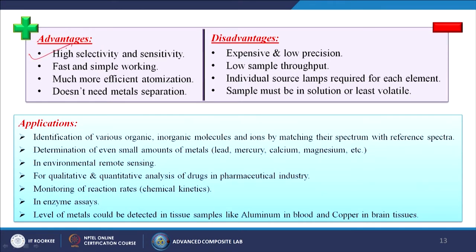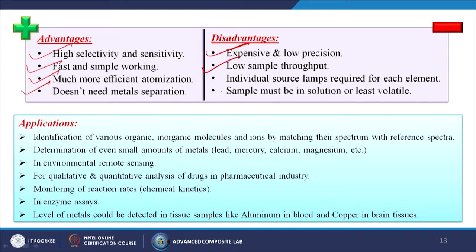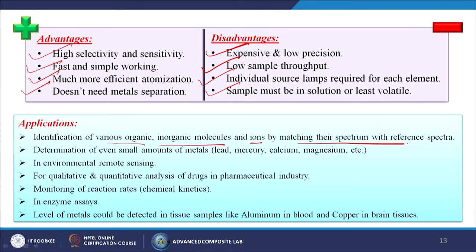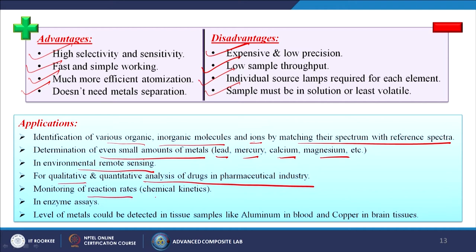Advantages of AAS: high selectivity and sensitivity, fast and simple working, much more efficient atomization, does not need metal separations. Disadvantages: expensive and low precision, low sample throughput, individual source lamps required for each element, and sample must be in solution or at least volatile. Applications: identification of various organic and inorganic molecules and ions by matching their spectrum with reference spectrum; determination of even small amounts of metals like lead, mercury, calcium, magnesium in environmental remote sensing; quantitative and qualitative analysis of drugs in the pharmaceutical industry; monitoring of reaction rates in enzyme assays; detection of metals in tissue samples like aluminium in blood and copper in brain tissues.